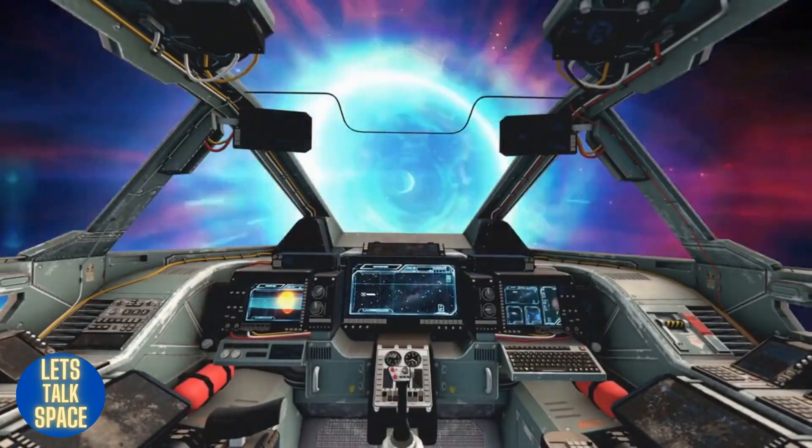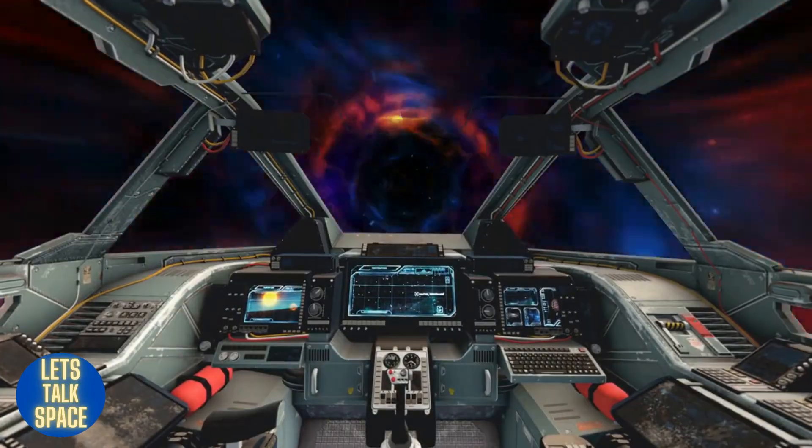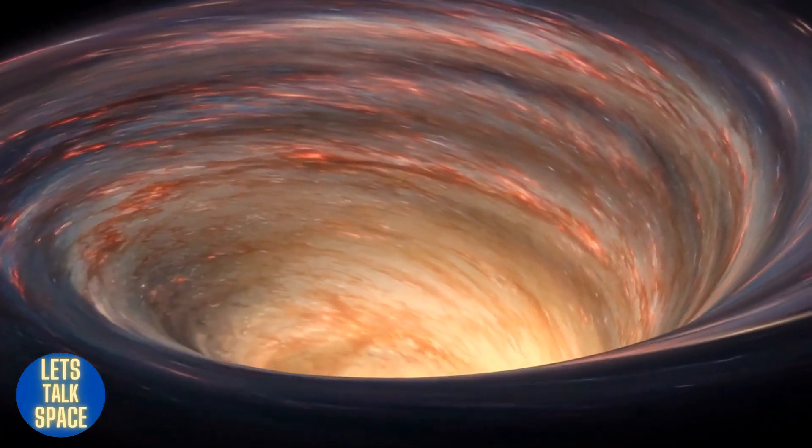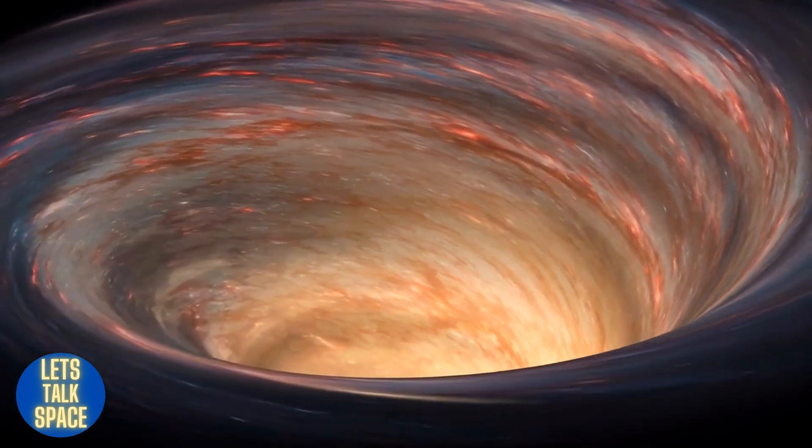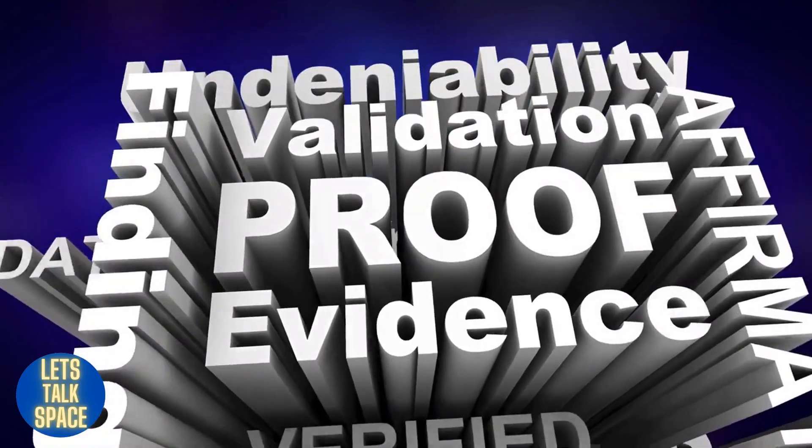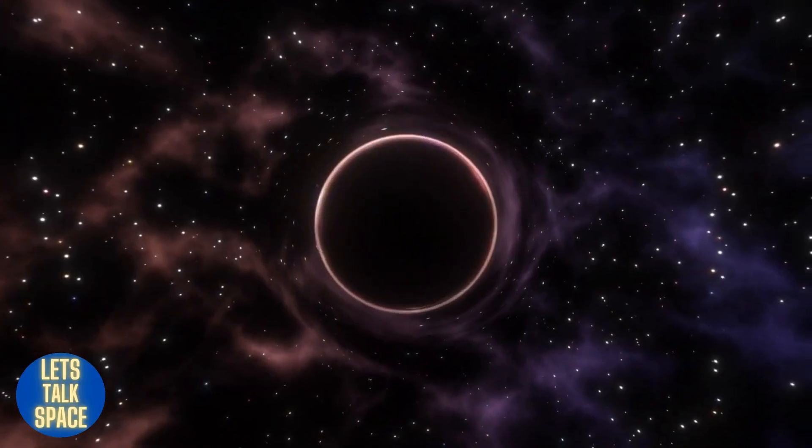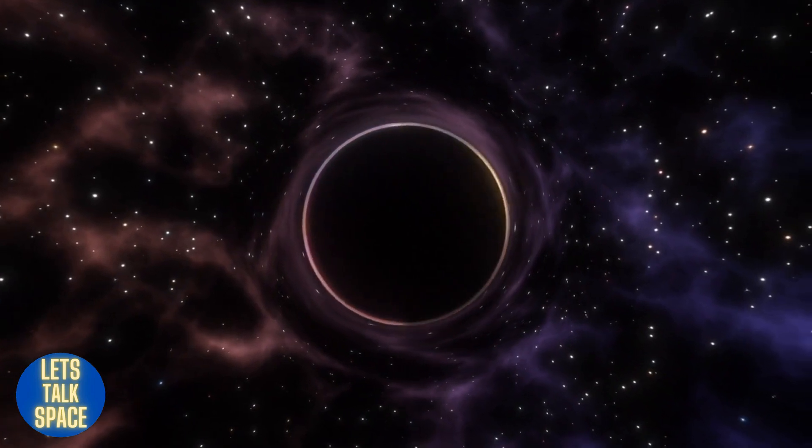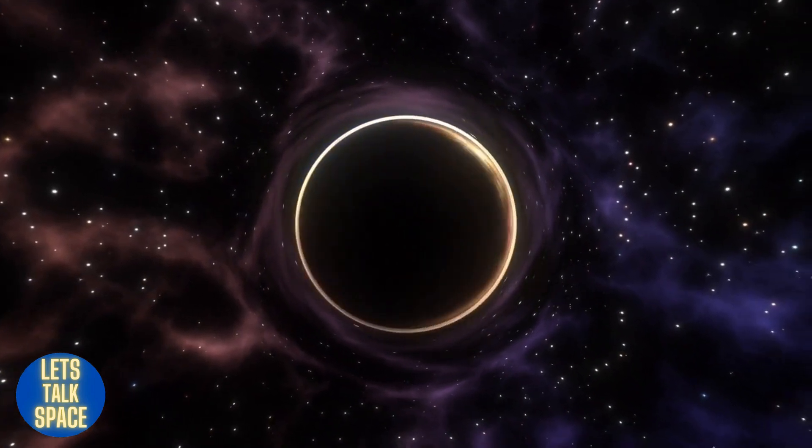Wormholes may exist in space and be used to quickly travel great distances. They're a theoretical method of rapid space travel that could potentially connect distant parts of the universe. But until now, there was no proof that they even existed. Now scientists believe they've found evidence for them in the form of a giant black hole making a meal out of a star nearby, and it's all happening inside our own galaxy.